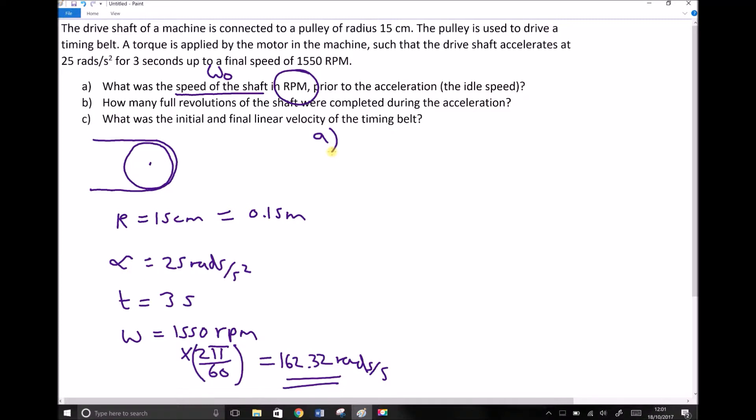So the equation I'm going to use to find initial velocity is alpha equals omega minus omega zero over t. And I want to get omega zero on its own, so the first thing I need to do to each side is times by t. And times by t will give me alpha t equals omega minus omega zero.